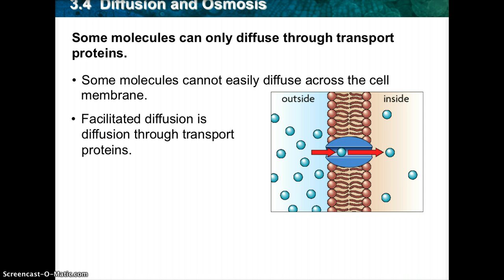Hundreds of different protein channels have been found that allow particular substances to cross the membrane. Although facilitated diffusion is fast and specific, keep in mind it is still diffusion. Therefore, a net movement of molecules across a cell membrane will occur only if there is a higher concentration of the particular molecule on one side than on the other. Because facilitated diffusion is still diffusion, this movement does not require the use of energy.